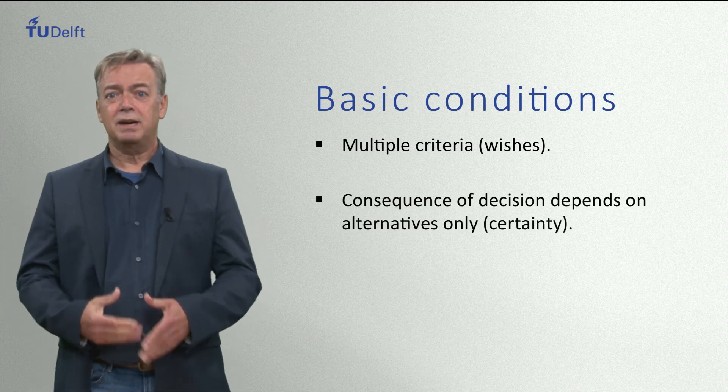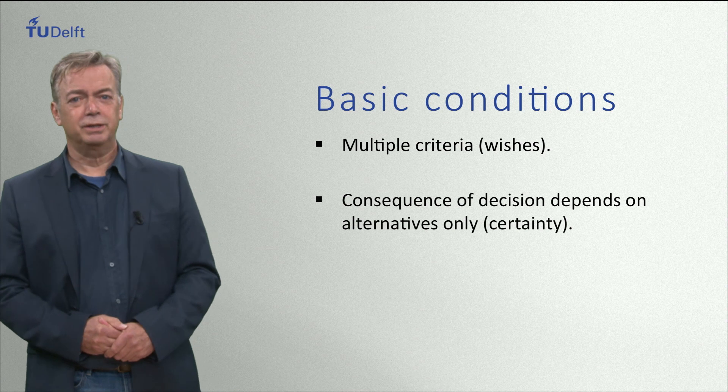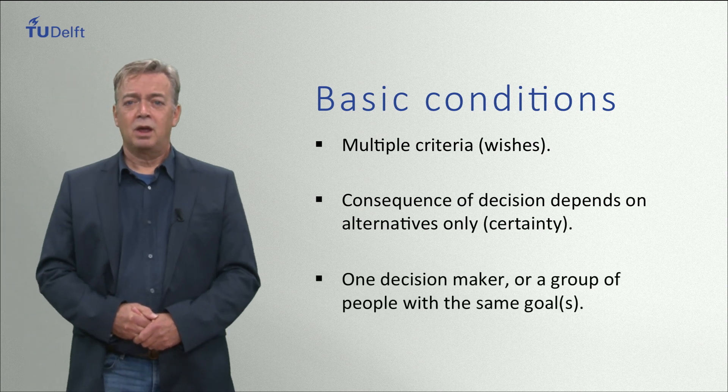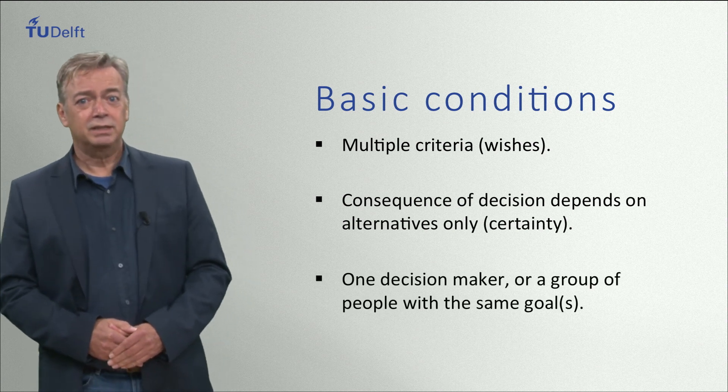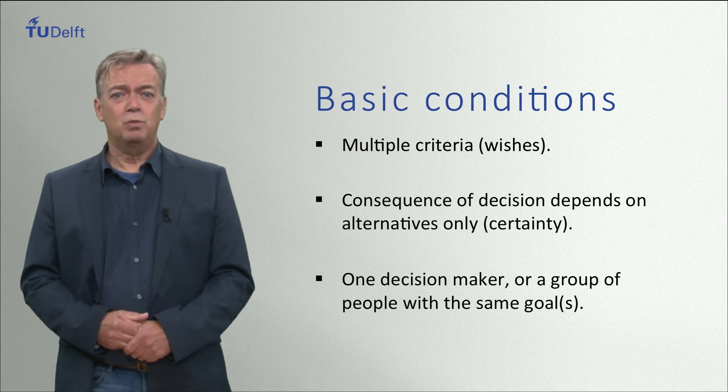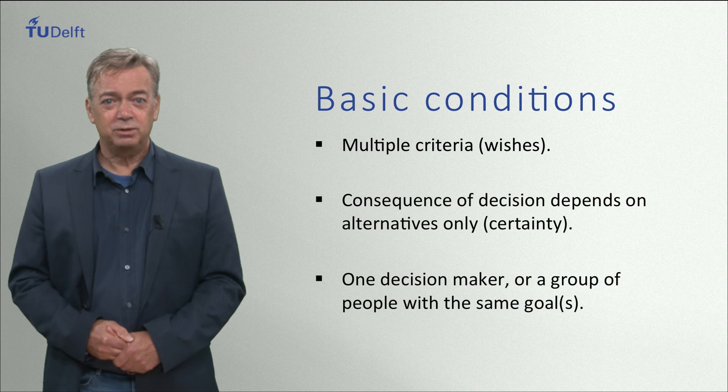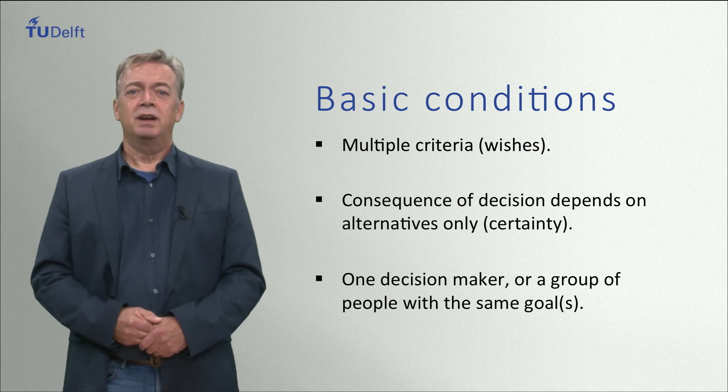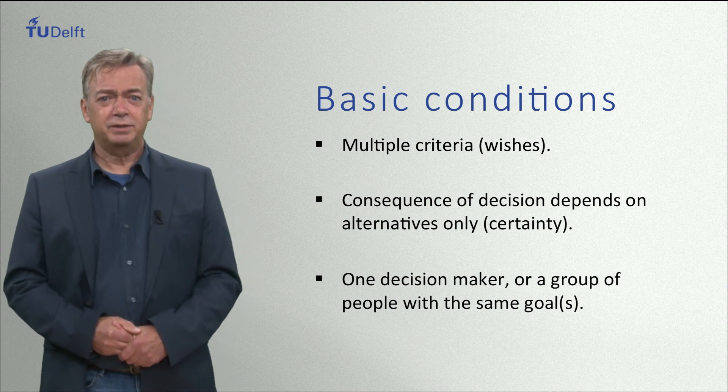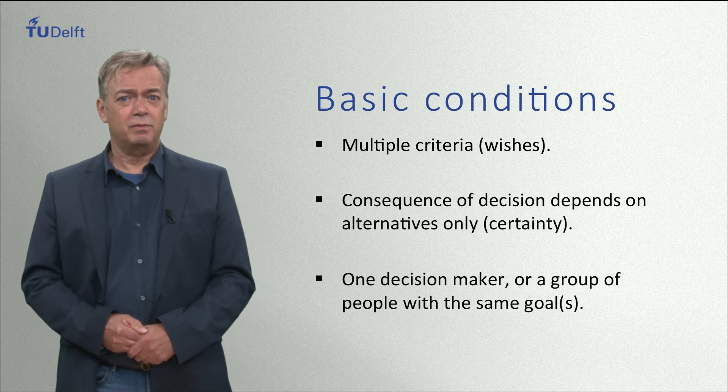So design decisions in my lecture can only be made under certainty. A third condition for design decisions is that we assume one decision maker only or a group of individuals with the same goal. Nevertheless decision makers with different goals exist but for them other methods need to be used.